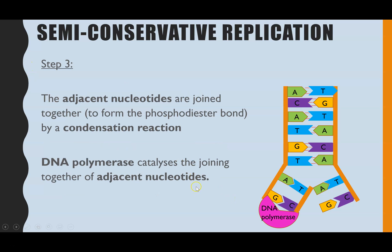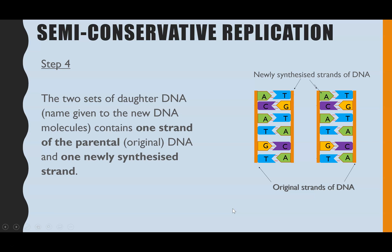The next step is joining together these adjacent nucleotides via a condensation reaction. The condensation reaction removes a water molecule to form a phosphodiester bond, which you would have learned about in the DNA structure content. This is catalyzed by DNA polymerase. If you are asked what is the function of DNA polymerase, it's to join together adjacent nucleotides. A useful way to remember this: DNA polymerase — the enzyme creates the DNA polymer.